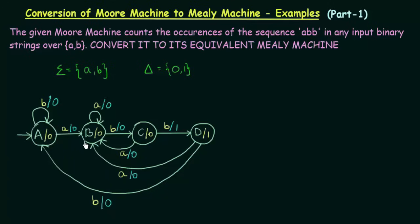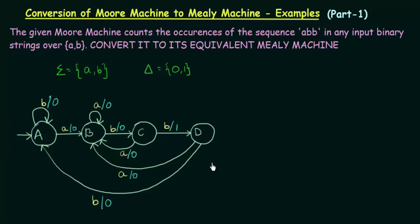Now we have to remove the outputs that were written in the states. So we remove the outputs associated to the states and associate the outputs to the transitions. We now have the Mealy machine for our question.